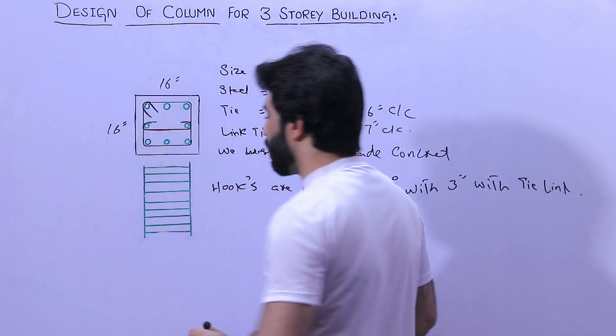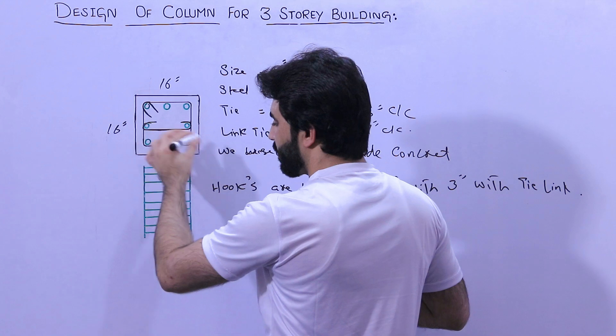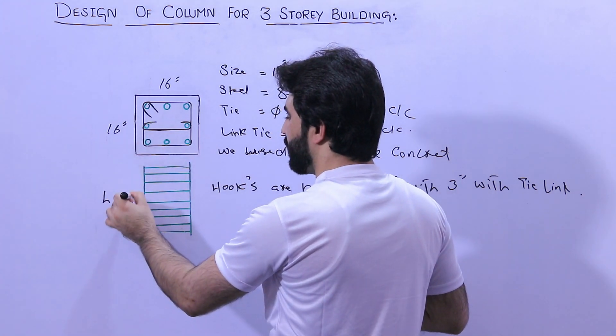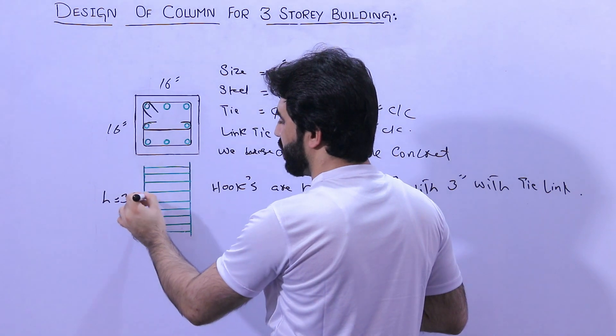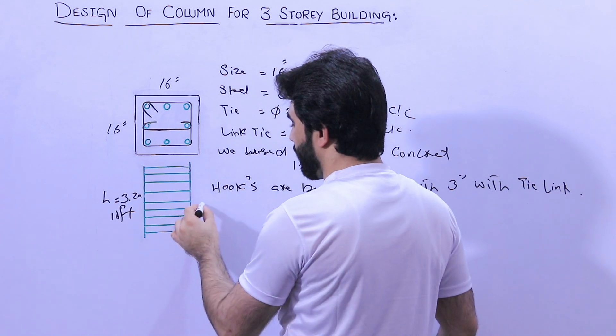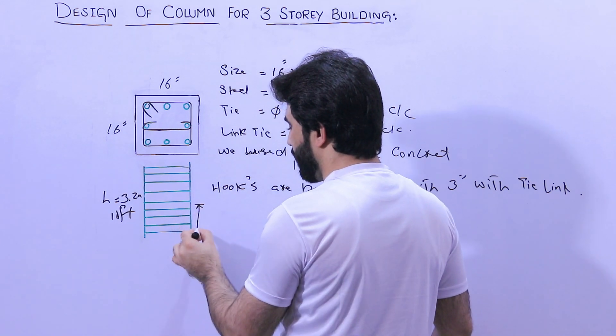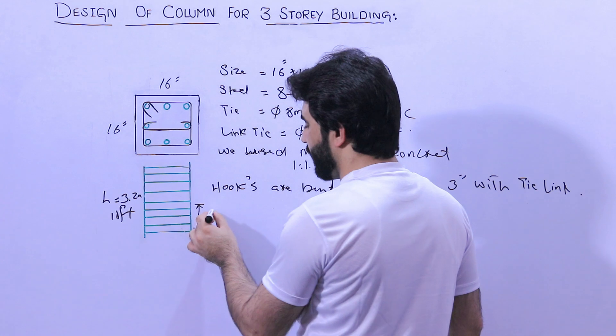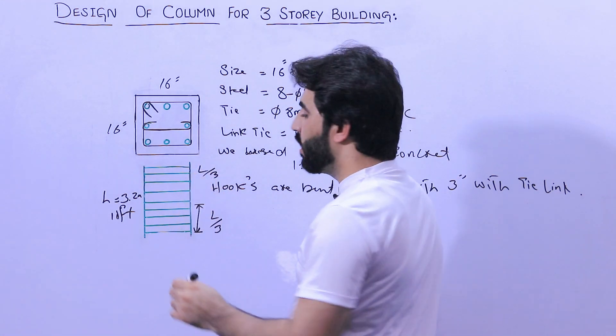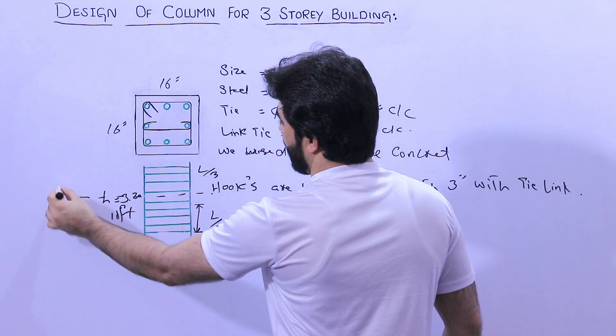Now let me guide you for the spacing of the stirrups or ties. The height is here 3.2 meters or you can say 11 feet. Therefore, to the height of L by 3 and also at the top L by 3, the middle is here L by 2.